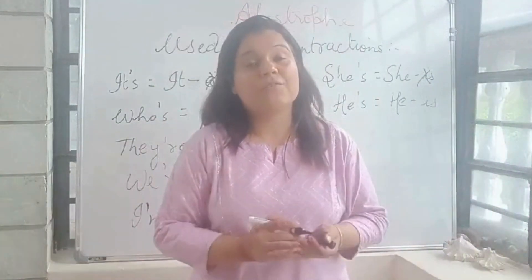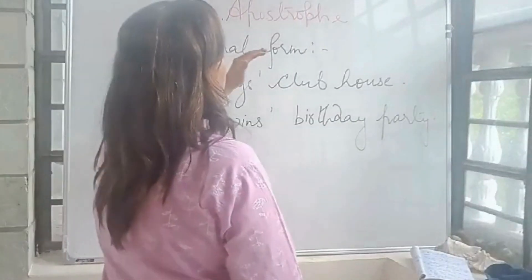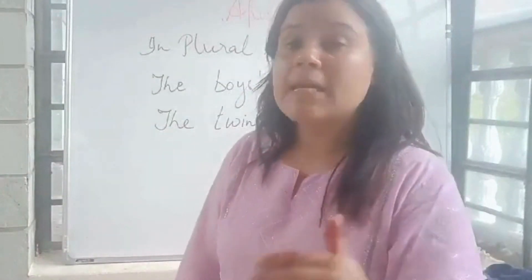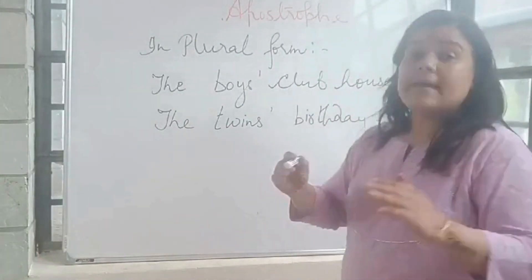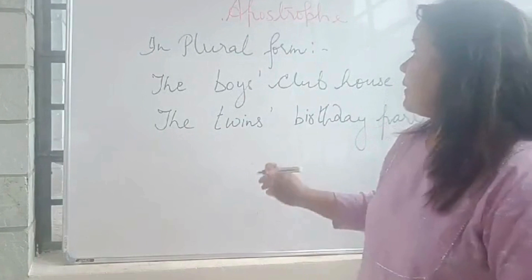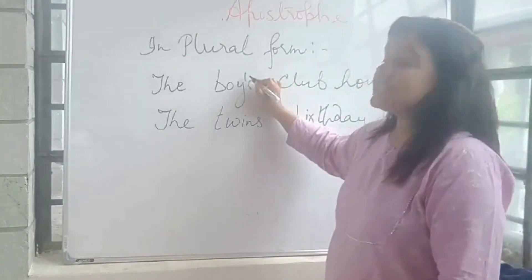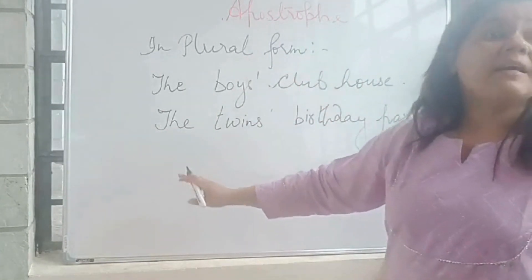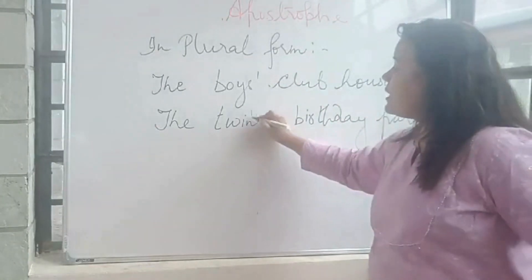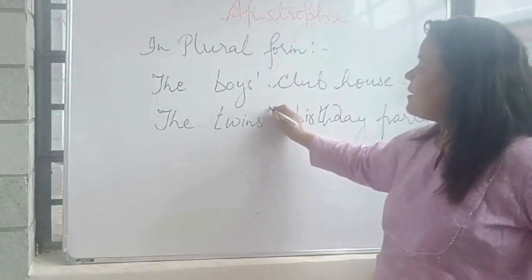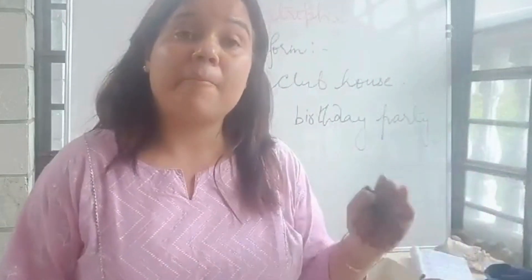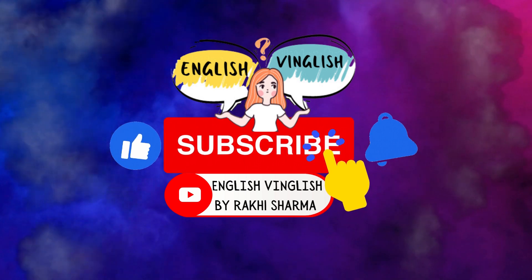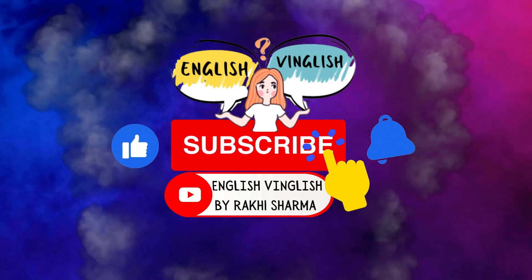Another important use of the apostrophe is in plural possessive forms. The boys' clubhouse — here the apostrophe comes after the S, not in between the Y and S. So the boys' clubhouse. Similarly, the twins' birthday party — three twins — the apostrophe comes after the S: twins'. In plural forms, the apostrophe always comes after the last letter S. For more videos, stay tuned — thank you so much for watching.